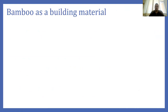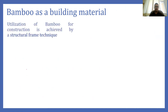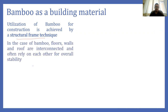If we discuss bamboo as a building material, we can utilize bamboo for construction using the technique of structural framing. Structural framing is basically the technique in which we have column, beam, walls, and roof system — all connected with each other. In this, bamboo floors, walls, and roofs are interconnected and rely on each other for better stability of the bamboo structure.